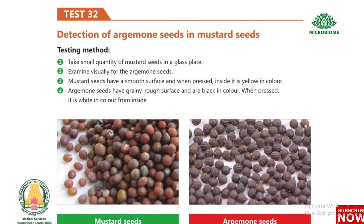Test 32: Detection of argemone seeds in mustard seeds. Take a small quantity of mustard seeds in a glass plate and examine visually. Mustard seeds have a smooth surface and are yellow inside when pressed. Argemone seeds have a grainy, rough surface and are black in color on the outside, and white inside when pressed.